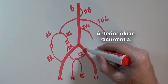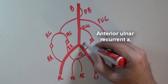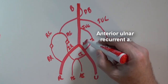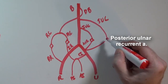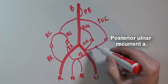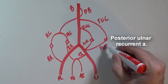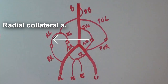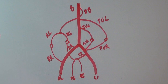Back to the ulnar artery, we have the anterior ulnar recurrent artery (AUR), which runs anterior to the elbow, and the posterior ulnar recurrent artery (AUR), which runs posterior.